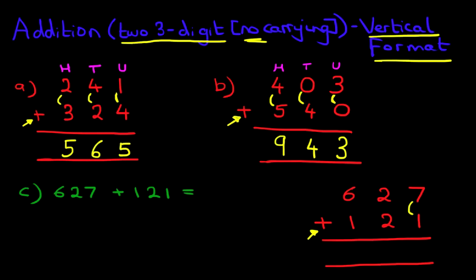The column on the right-hand side, 7 plus 1 is 8. 2 plus 2 is 4. And finally, 6 plus 1 is 7. So 627 plus 121 is 748.